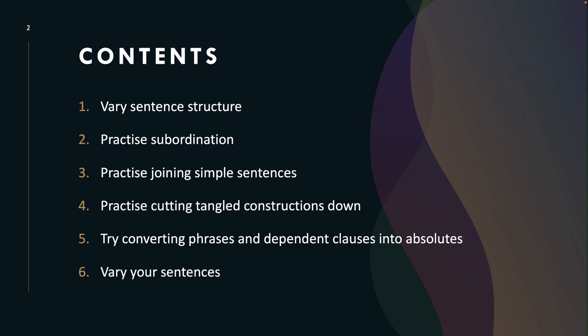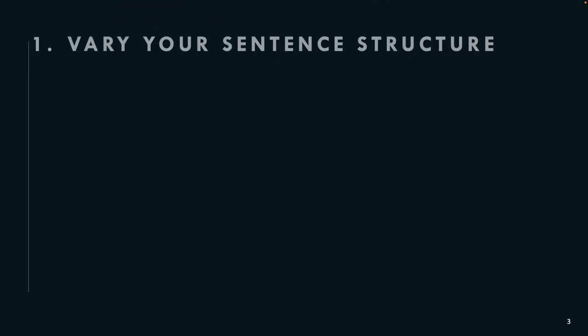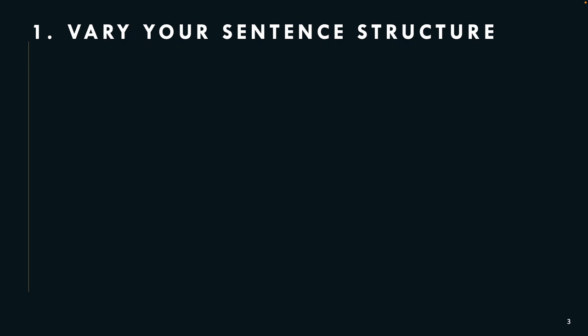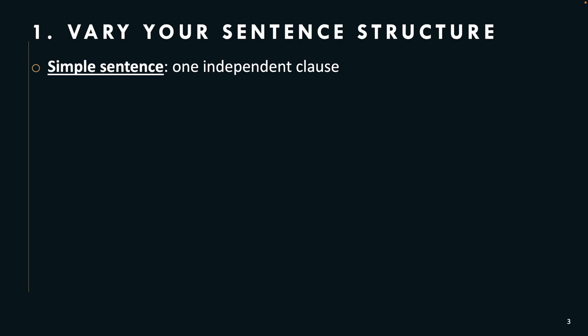So let's get started with number one: vary your sentence structure. By now, you should be able to understand what an independent and dependent clause is. A simple sentence is one independent clause. Let's take a look at the first example: 'Mary and John split their assets equitably.' We have the subject — Mary and John — then a verb — split — and then an object — assets. Equitably is an adverb. An independent clause can stand alone; there is a subject and there is a verb.